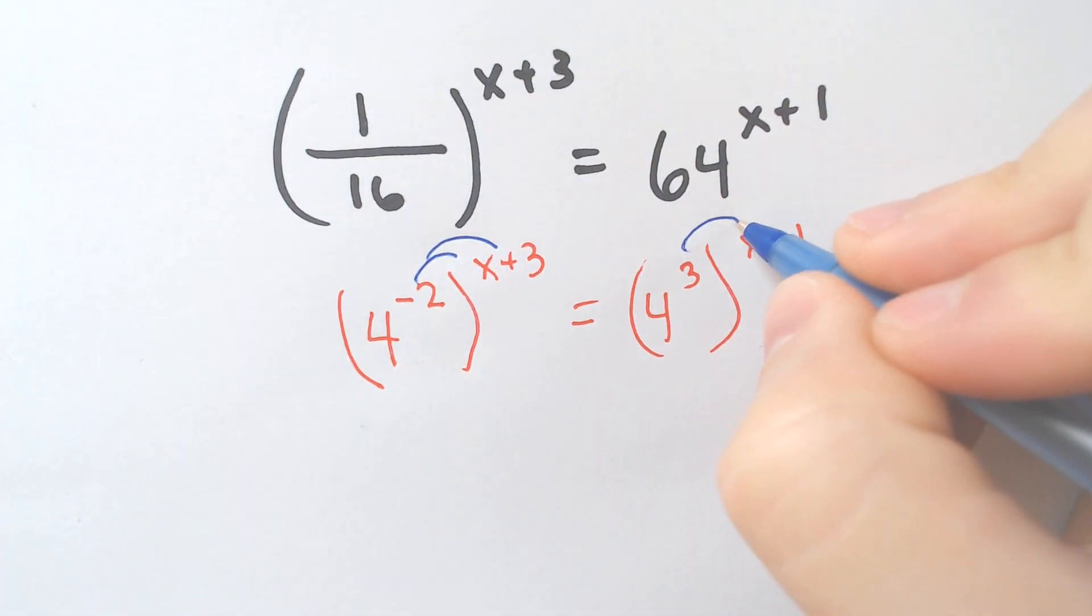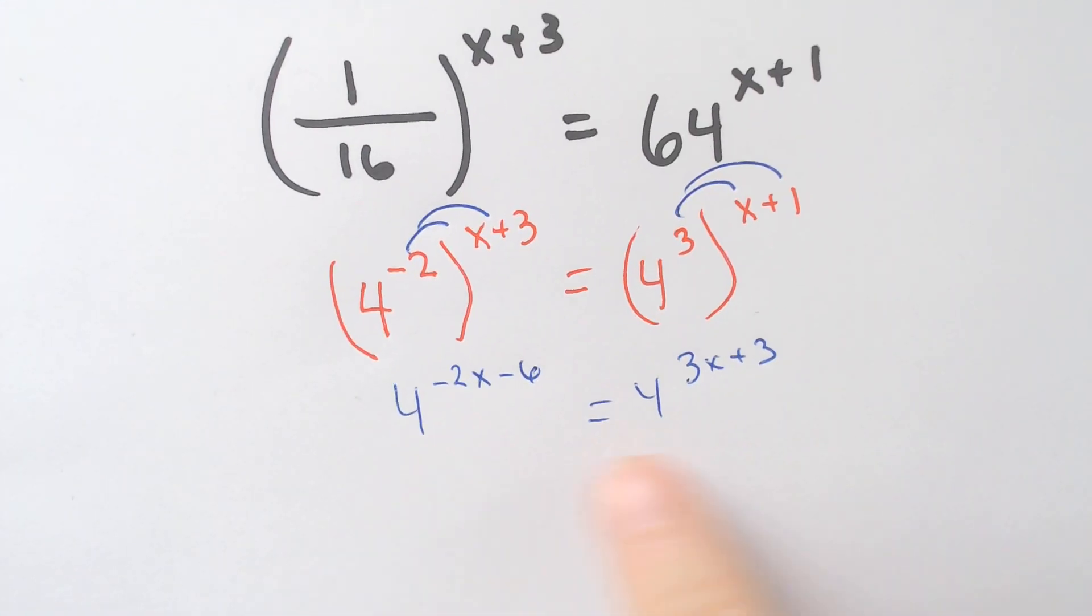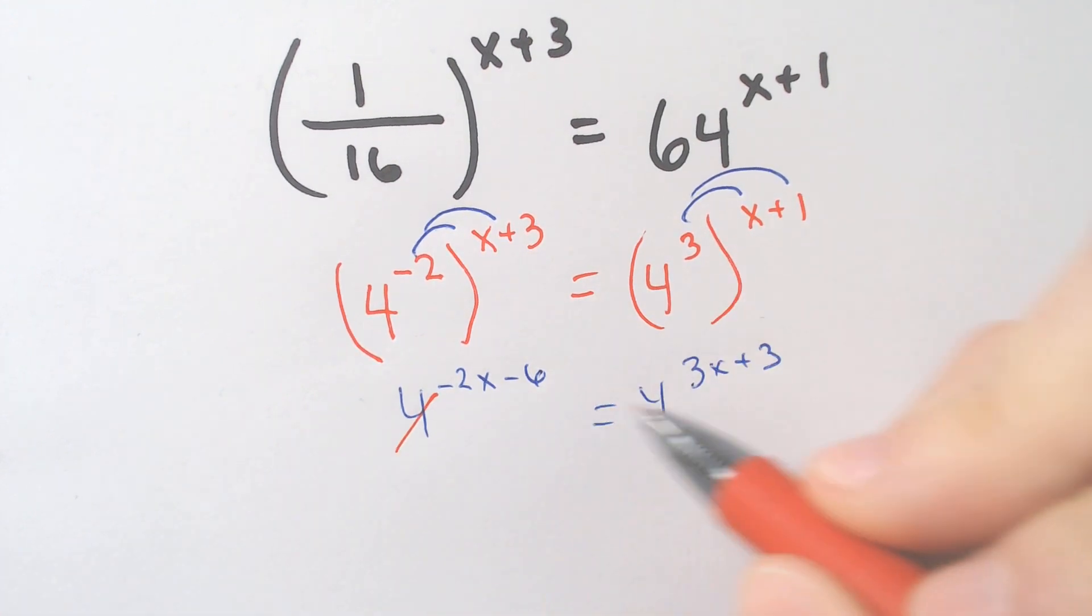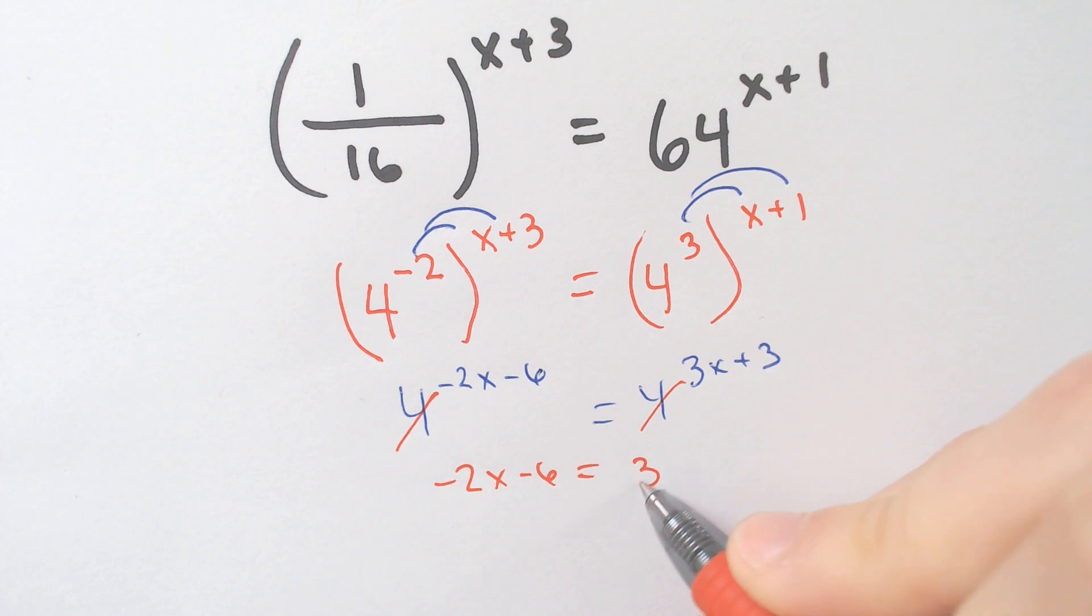Distribute both. We get 4 to the negative 2x minus 6 is equal to 4 to the 3x plus 3. The 4s diminish and go away. We get negative 2x minus 6 is equal to 3x plus 3.